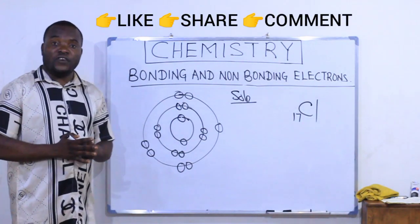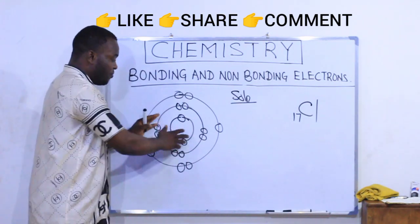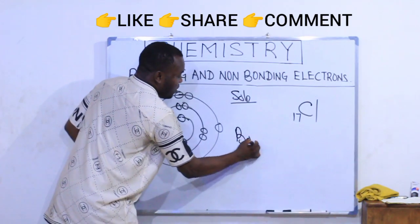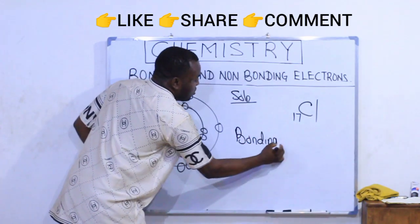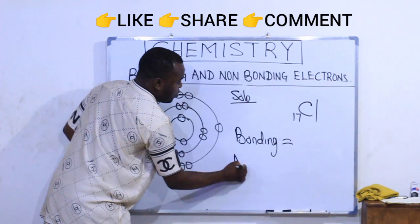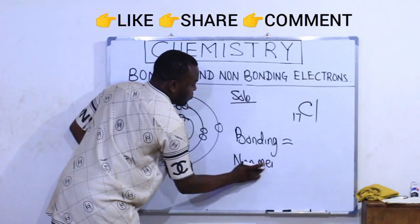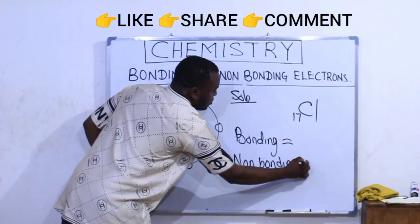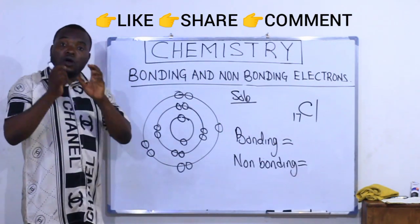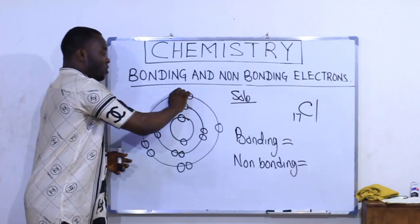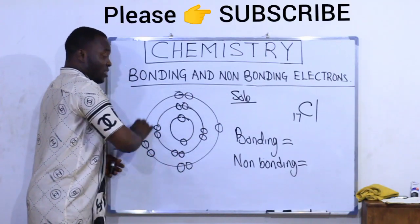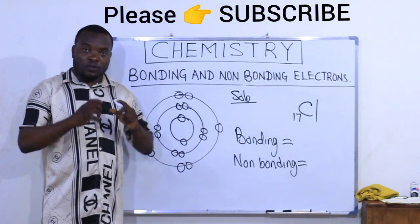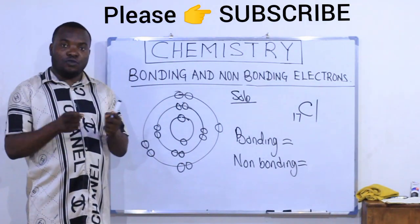All I need to do now is find the number of bonding electrons here and the non-bonding electrons here. I will put my bonding equals, non-bonding equals. Let's find it. Now, you have to focus on the outermost shell. That is where the exchange of electrons or bonding occurs, at the outermost shell of an atom.